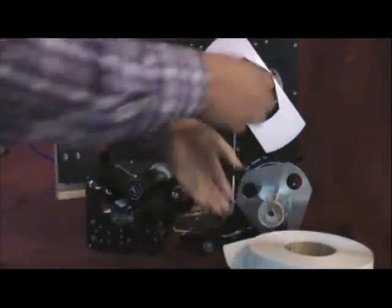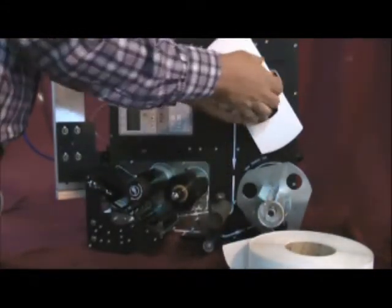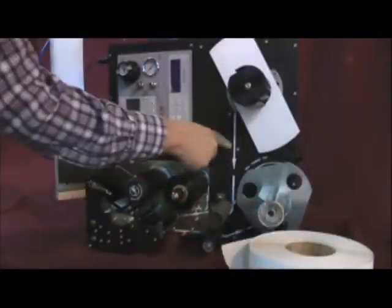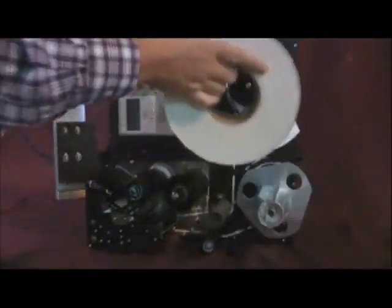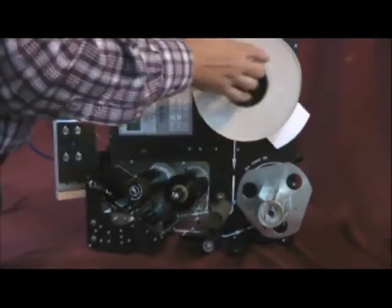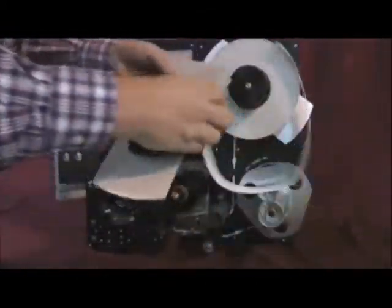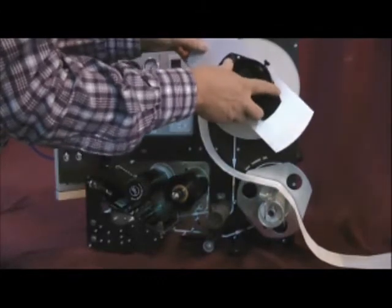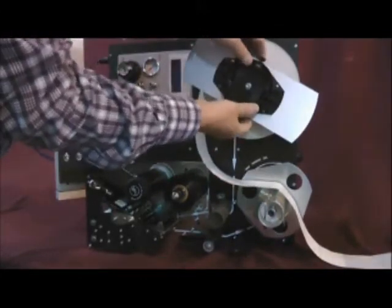Loading the labels, begin by removing the outer label unwind hub. Follow the pre-printed label path. Place a roll of labels on the label unwind hub with the labels unwinding in the counterclockwise direction. Replace the label unwind hub tight into place.